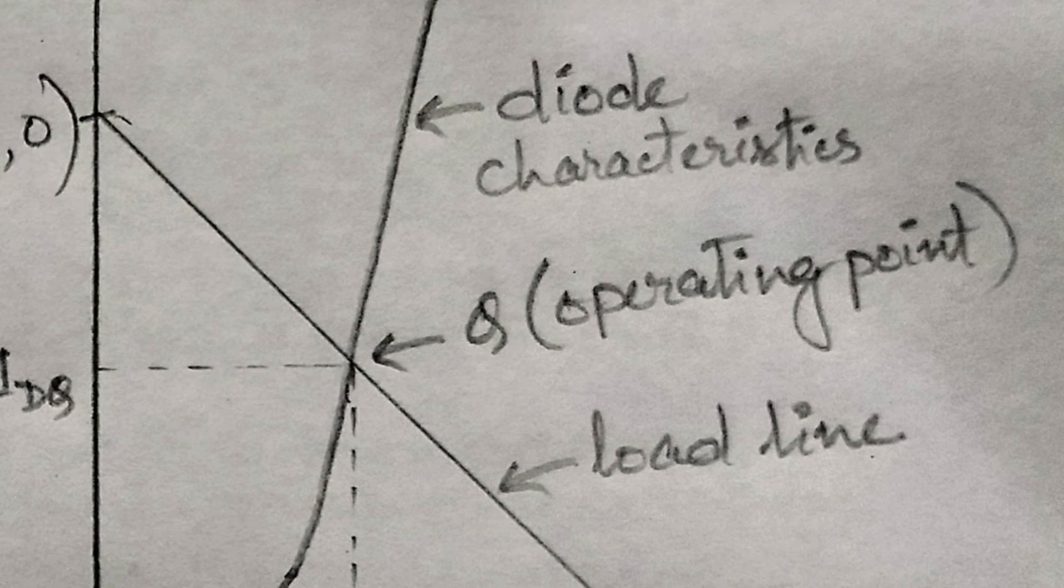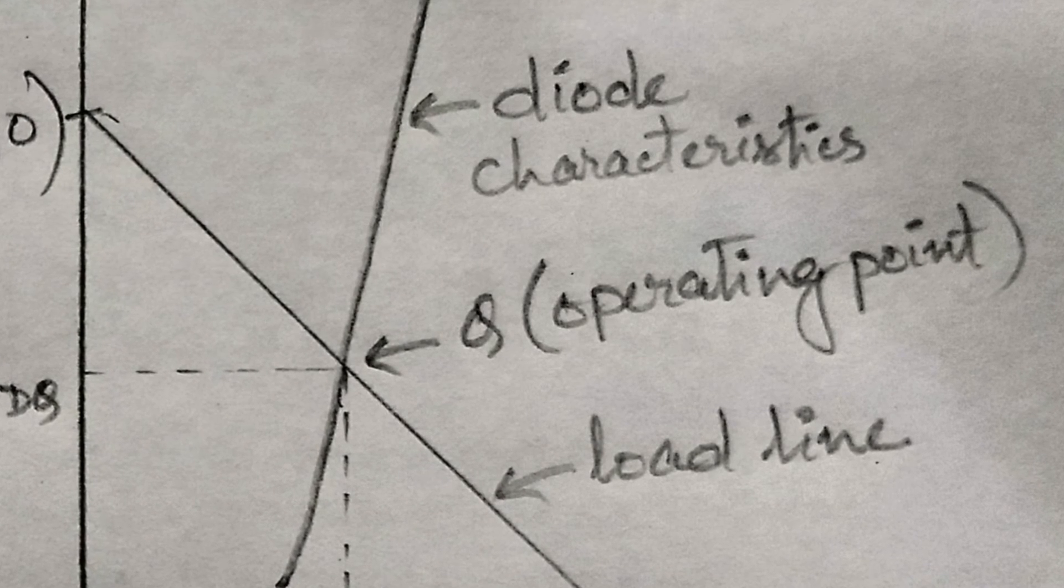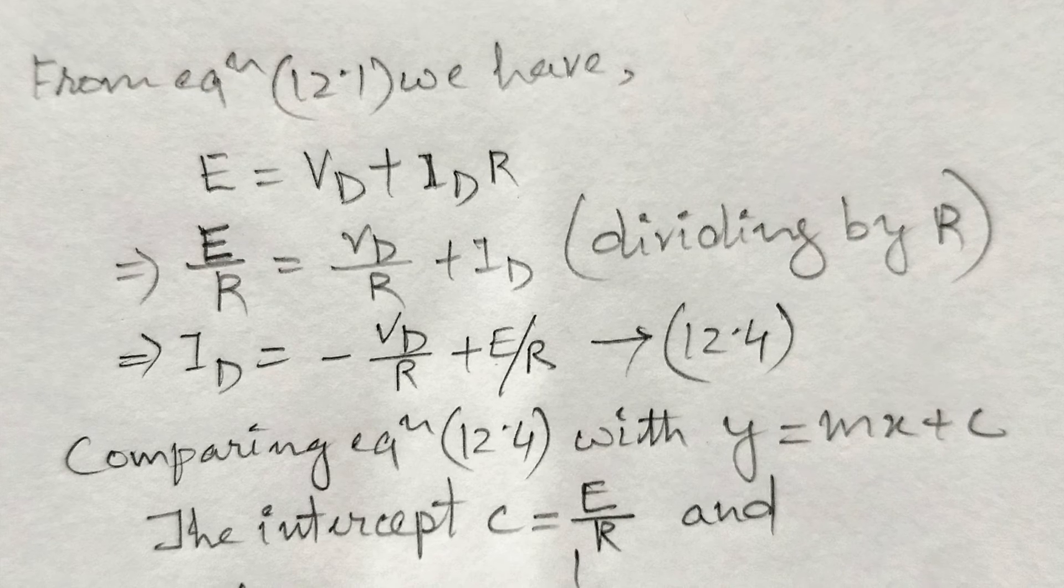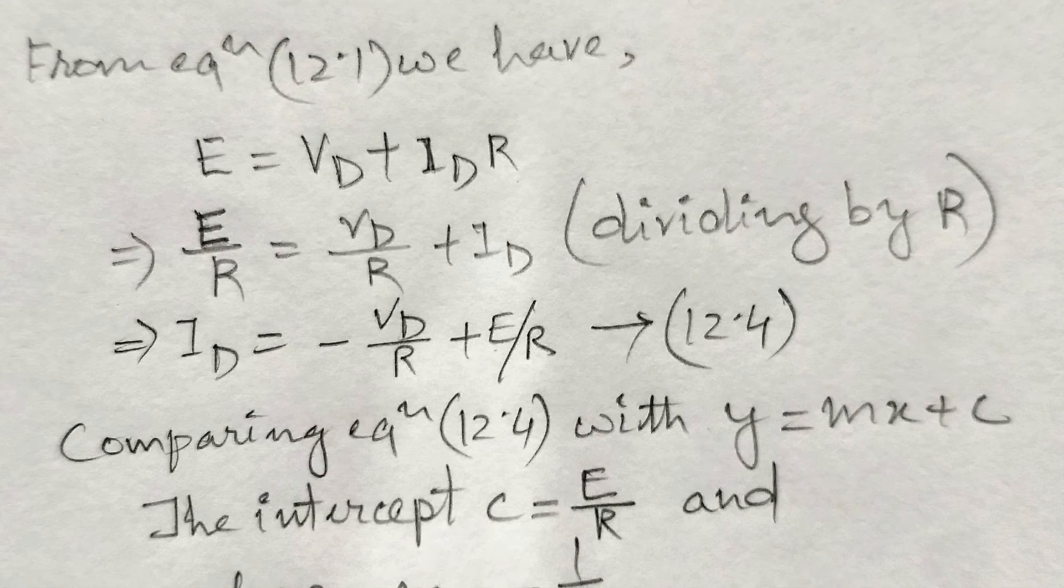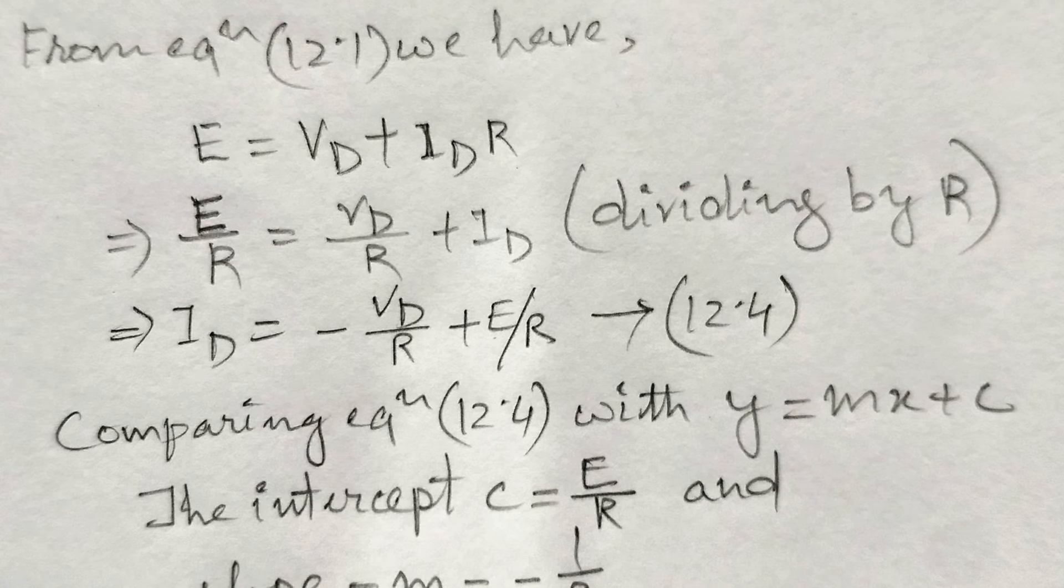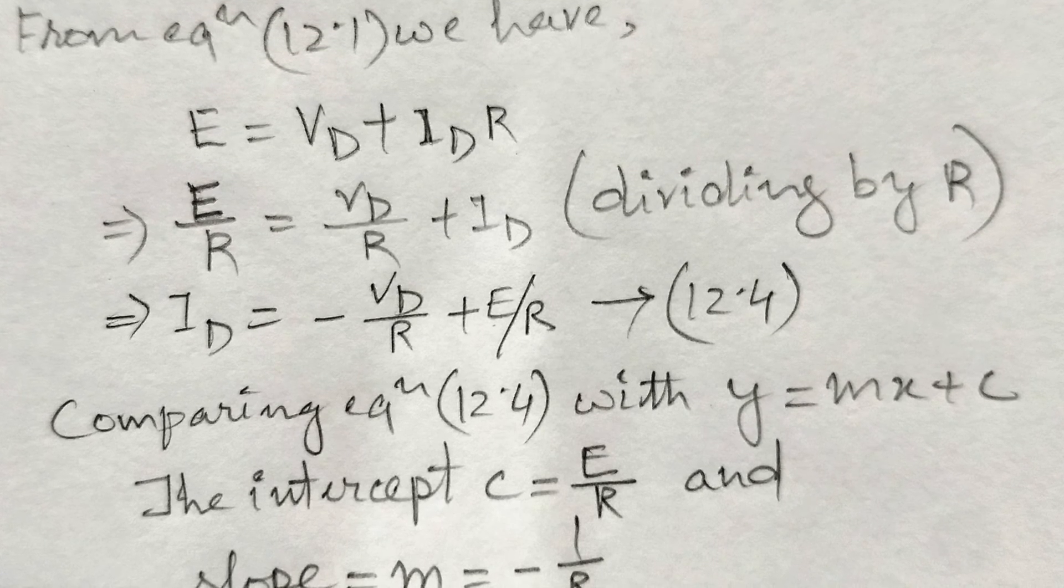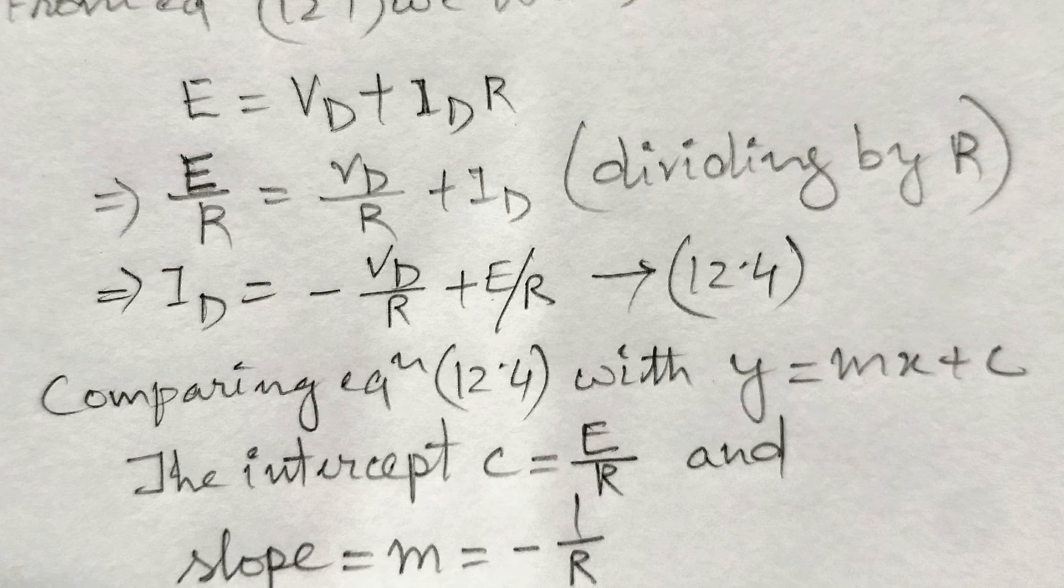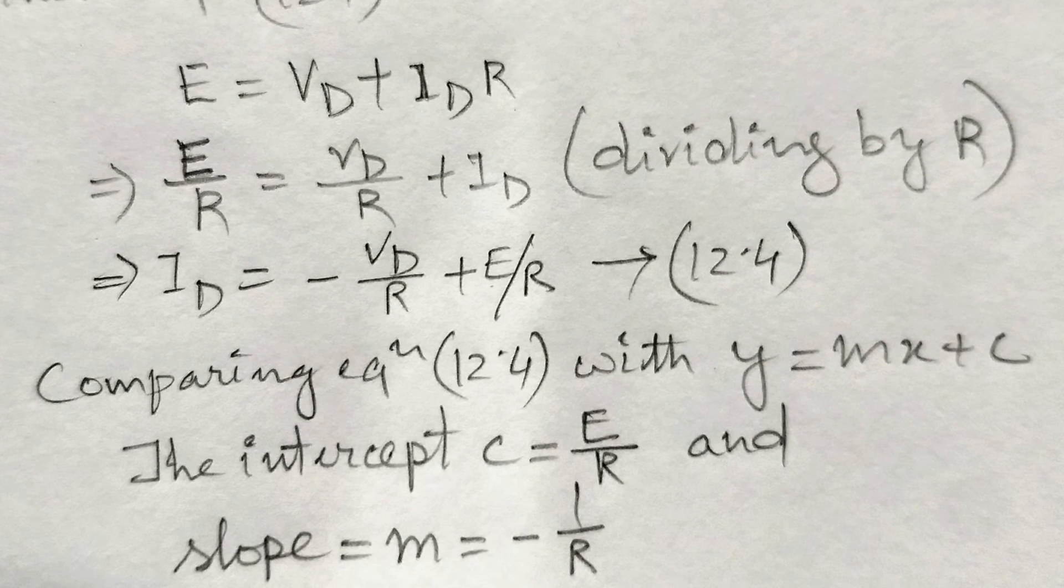Now, let us find the slope of the load line. From equation 12.1, we get an equation for Id. Comparing this equation 12.4 with standard form Y equal to Mx plus C, we get the intercept C equal to E divided by R and slope is